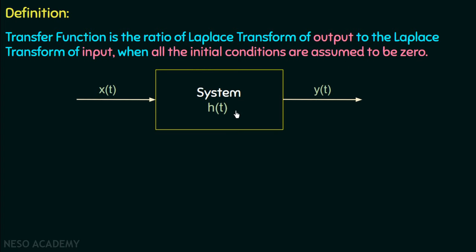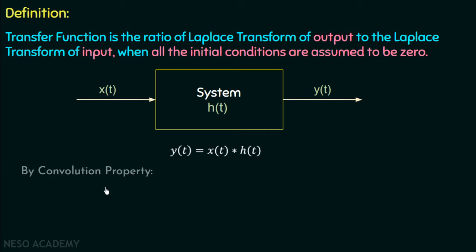Now suppose we have an LTI system whose impulse response is h(t). We are giving an input x(t) to the system and its response is y(t). We know that y(t) is equal to the convolution of x(t) and h(t). From the convolution property, we know that convolution in the time domain is multiplication in the frequency domain. So by the convolution property, we can write Y(s) = X(s) · H(s), where Y(s) is the Laplace transform of y(t), X(s) is the Laplace transform of x(t), and H(s) is the Laplace transform of h(t).